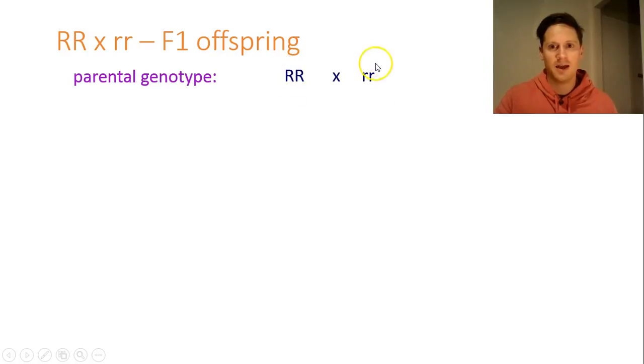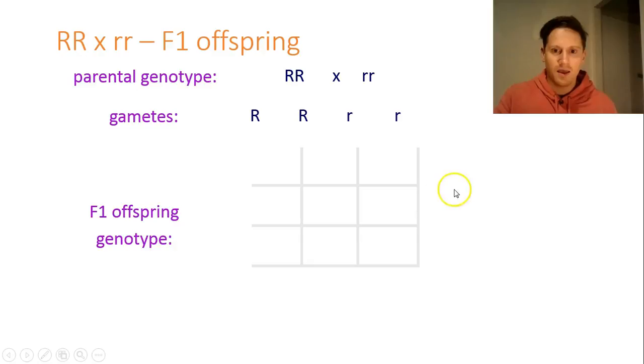So big R, big R for the red one and little r, little r for the white one. The gametes are split up. So basically it's saying this homozygous big R, big R can pass on either big R or big R. That's the only thing it can pass down to the next generation. The little r, little r flower can only pass down little r gametes to the next generation. So there's only those possibilities. So you draw up your Punnett square and you put in the parental gametes down the side and up the top. So you split up those gametes here, here, here and here.